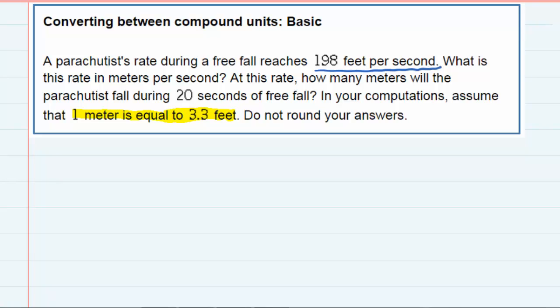First of all, notice that we're actually being asked two questions here. The first one and then the second one. So let's start with the first one. We're asked, what is the rate in meters per second? So we know the rate. It was given to us: 198 feet per second. So I'm going to write it as a fraction with the feet on the top and the seconds on the bottom.